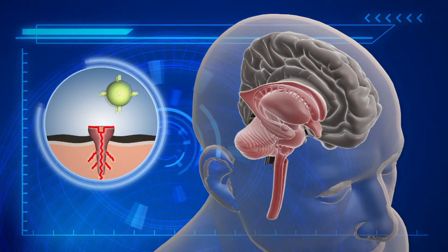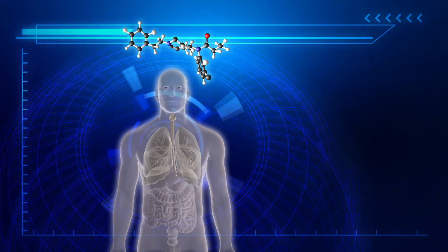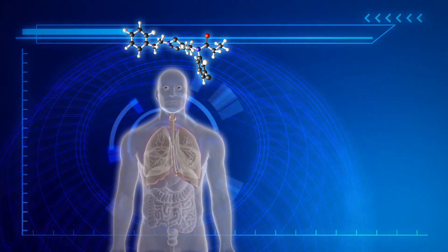Once consumed, the opioids attach to receptors in the brain to reduce the brain's perception of pain. However, these same receptors also control breathing and the digestive system.